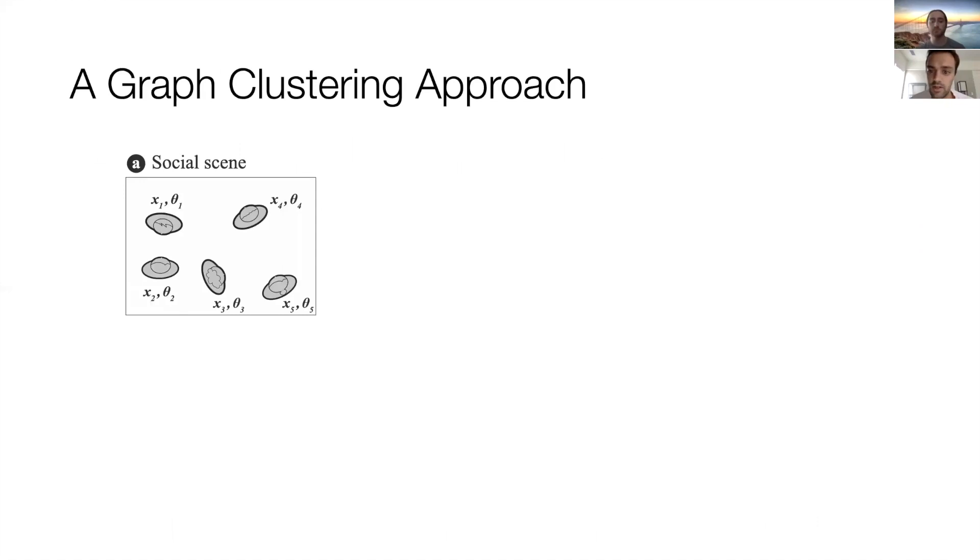To perform group detection, we leverage an existing graph clustering pipeline which works as follows. Each social scene is captured, and the 2D position and orientation of each participant is extracted, typically using an off-the-shelf computer vision algorithm.